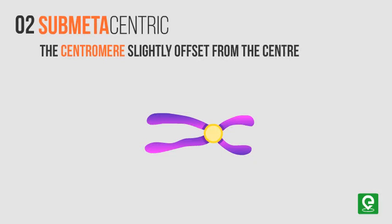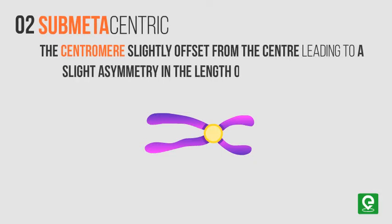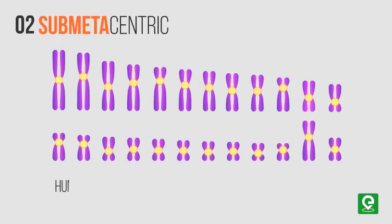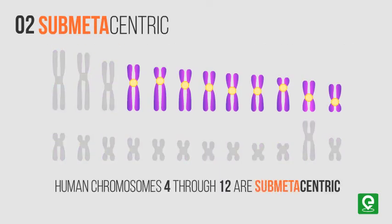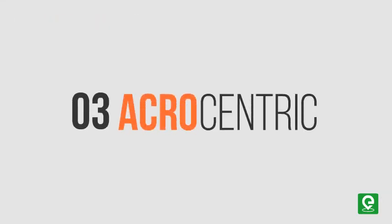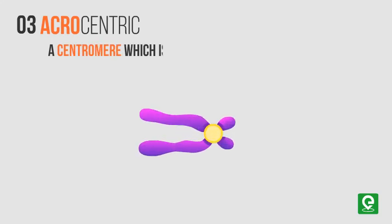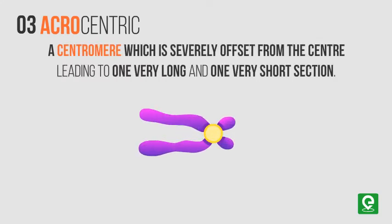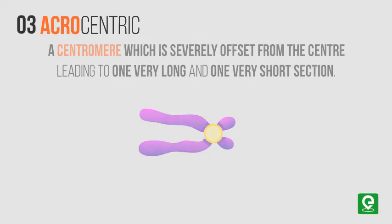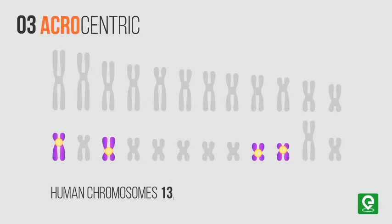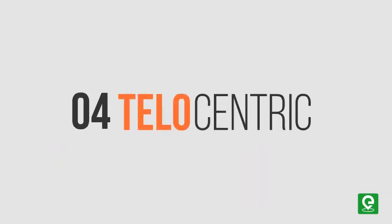Second: sub-metacentric chromosomes — they have the centromere slightly offset from the center, leading to a slight asymmetry in the length of the two sections. Human chromosomes 4 through 12 are sub-metacentric. Third: acrocentric chromosomes — they have a centromere which is severely offset from the center, leading to one very long and one very short section.